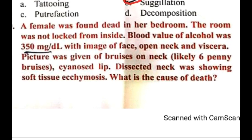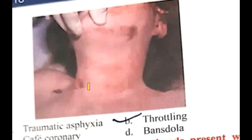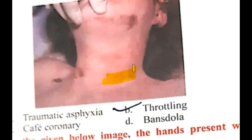Next question: a female was found dead in her bathroom. The door was not locked from inside. Blood alcohol level was 350 mg per deciliter. The image shows bruises on the neck, cyanosed lips, and the dissected neck showing soft tissue ecchymosis. On careful observation, you can see finger markings on the neck. This patient died due to throttling — someone throttled her neck, causing death. So this is a case of throttling.